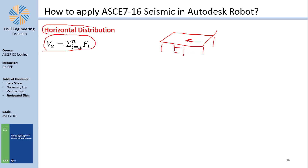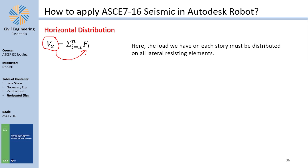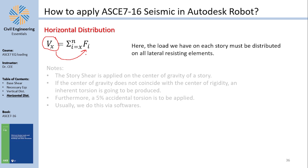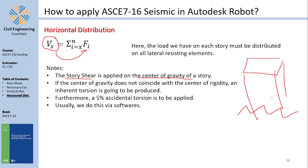Horizontal distribution seems superfluous but I will discuss it for completeness. If you have the shear on a story, you can find the shear on each lateral resisting element by distributing the story load. Note number one: the story shear is applied at the center of gravity — because earthquake is a dynamic effect, and dynamic forces are applied at the center of gravity. There is a big issue: if the center of gravity does not coincide with the center of rigidity, an inherent torsion is produced. Furthermore, a five percent accidental torsion must also be applied.